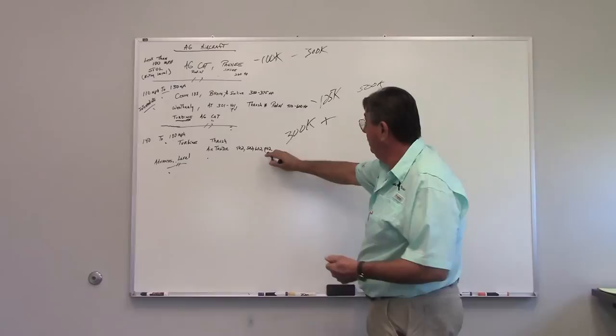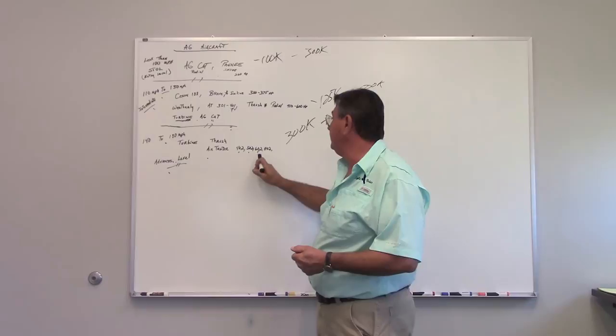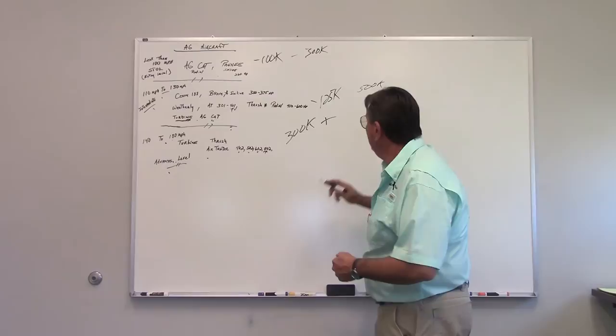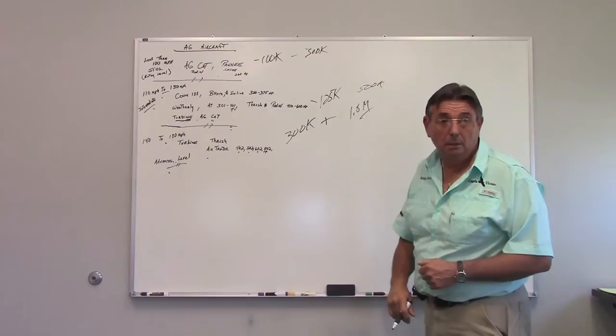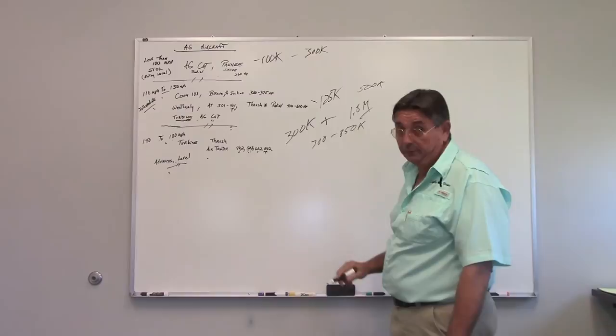But when you get into the advanced category, we're looking at the turbine thrush, turbine air tractor, turbine AgCat. The 402, 502, 602, 802. For example, 802 with all the bells and whistles, you're bumping probably 1.8 million dollars. Smaller like the 402, 502, you're looking at probably 700 to 850 thousand dollars. So once again, you need a pretty big operation, have a lot of places to go. And there's a lot of different things.